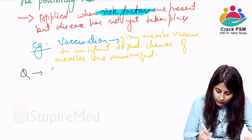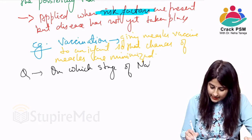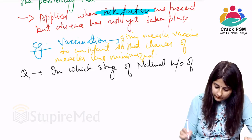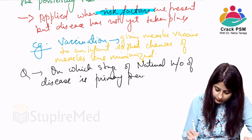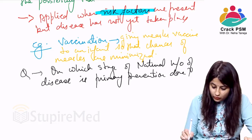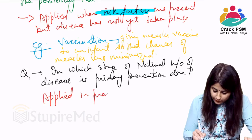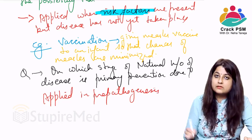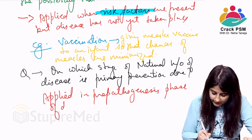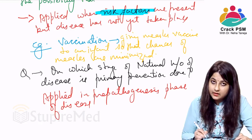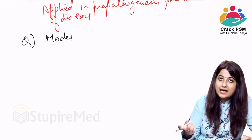In which stage of the natural history of disease is primary prevention done? It is applied in the pre-pathogenesis phase — before the occurrence of the disease but when risk factors are present.